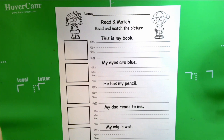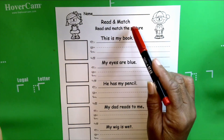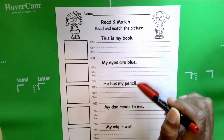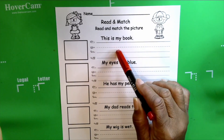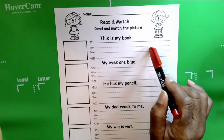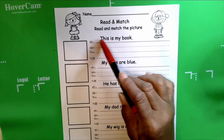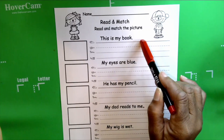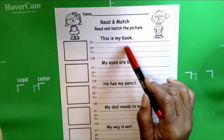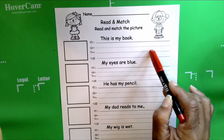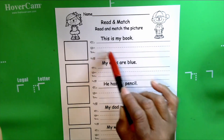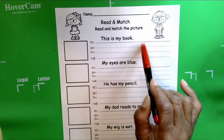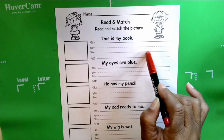Okay boys and girls, we're ready to get started today. We're going to read and match the picture to the sentence, and we're also going to write the sentence because we've learned about our lines. We know that the first line is our skyline, the second line is our plain line, the third line is our grass line, and the last line is our worm line. And we have learned how to position our letters on the grid. So let's get started.